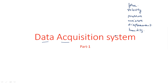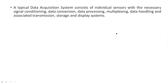These different types of transducers are connected at the input of the data acquisition system. They are used to collect the data and send it to the multiplexer, where some processing will be done to get the required operation. A typical data acquisition system consists of individual sensors with necessary signal conditioning, data conversion, data processing, multiplexing, data handling, and associated transmission, storage, and display systems.